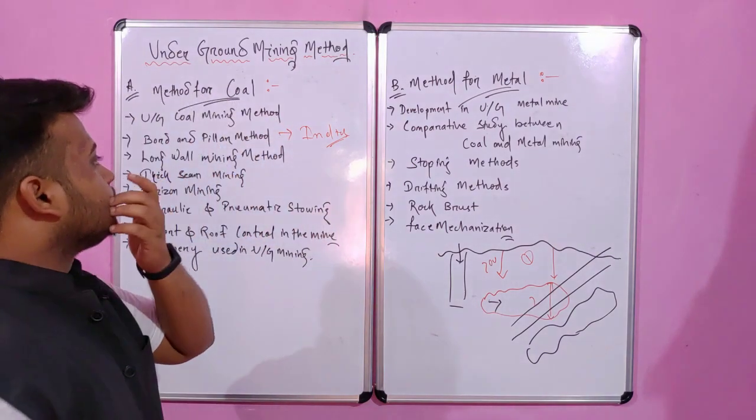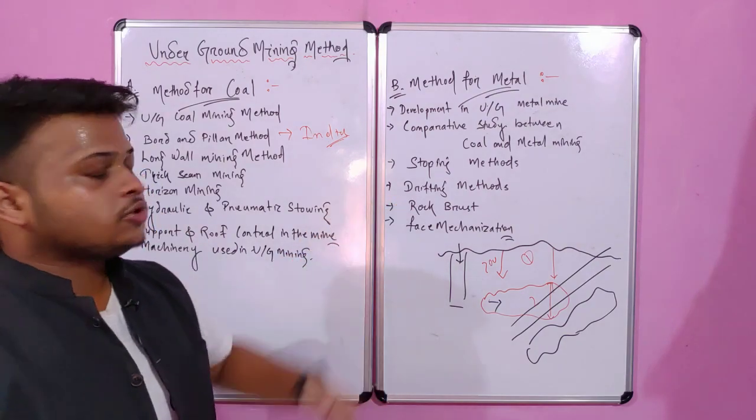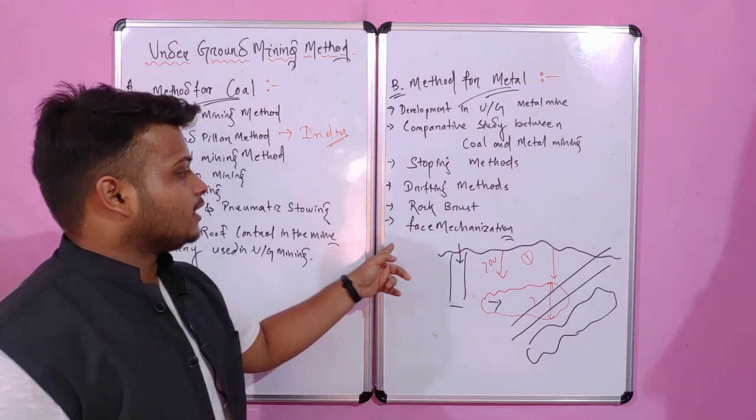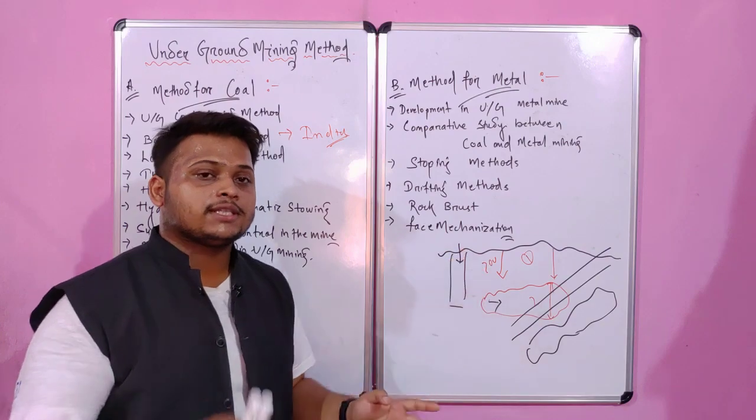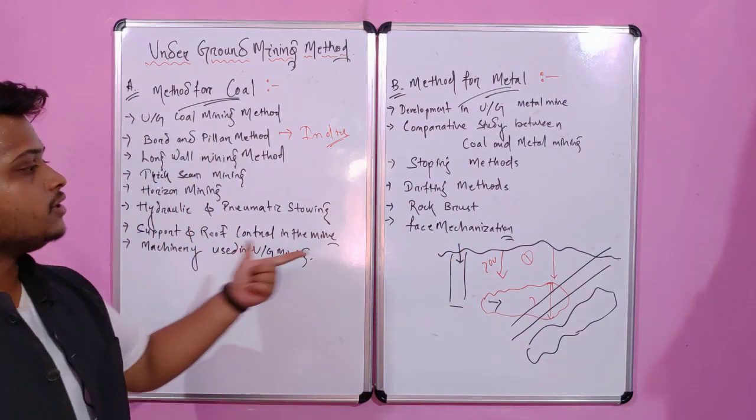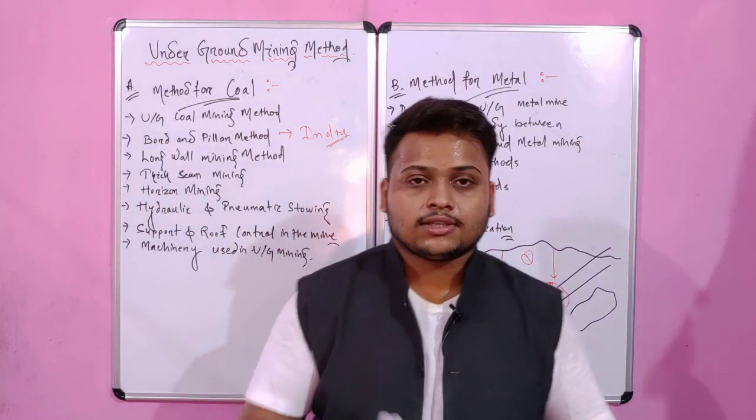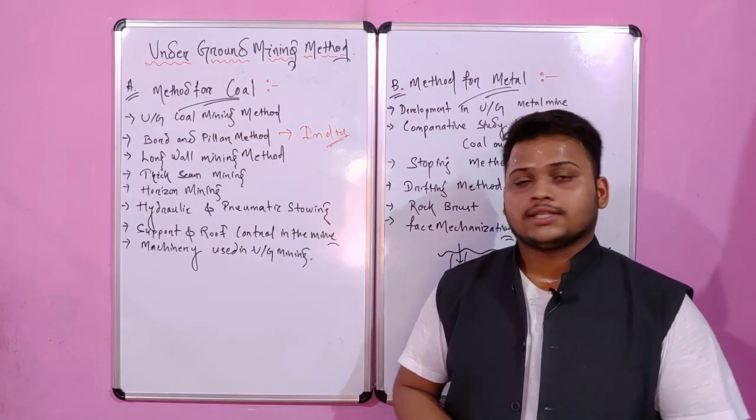Then comes the stoping method, drifting method, rock burst and face mechanism. This face mechanism part is basically the machinery used for the purpose of underground metal mining. So this is all about our underground mining method. This is all for today, bye bye, take care.